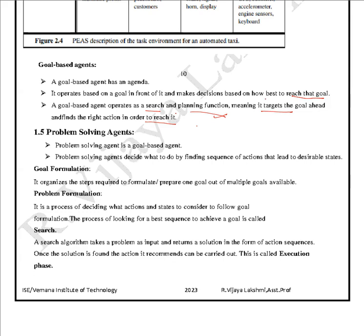The next type of agents are problem-solving agents. Problem-solving agents are based on goal-based reasoning, and they decide what to do by finding a sequence of actions that leads to desirable states. Problem-solving agents will be discussed in detail in the next module.